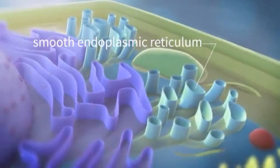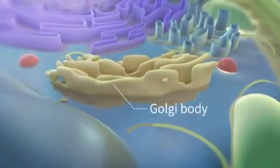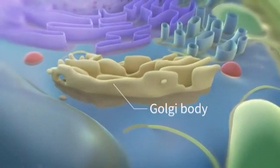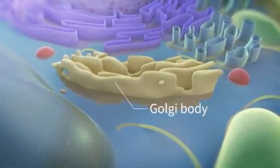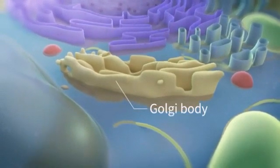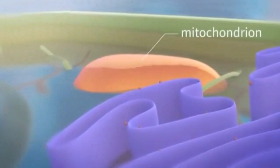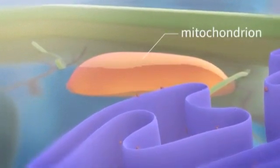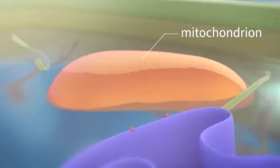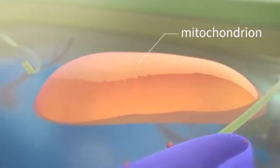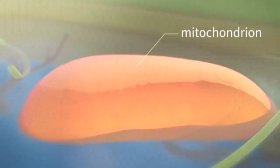Coming to the other bodies which are Golgi bodies, which are parallel flat discs, here the substances are processed, stored, and then transported to other cells. The powerhouse of the cell is mitochondria, which releases energy in the form of ATP. The size and shape varies from cell to cell.